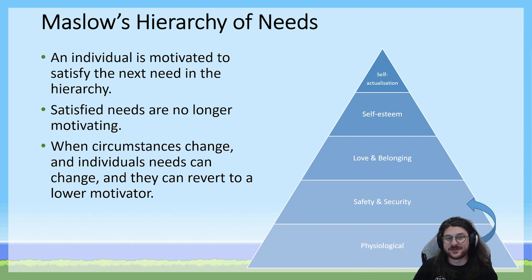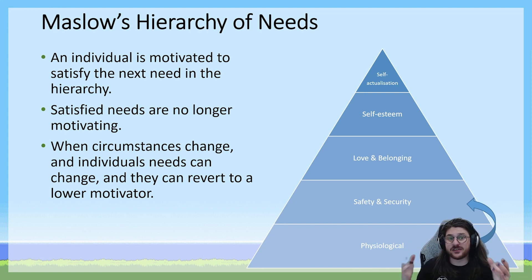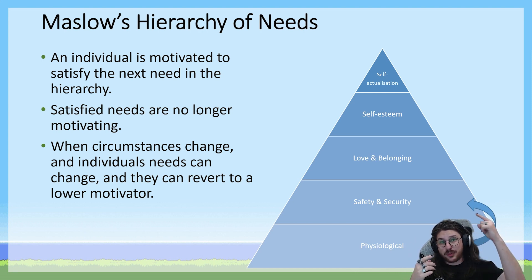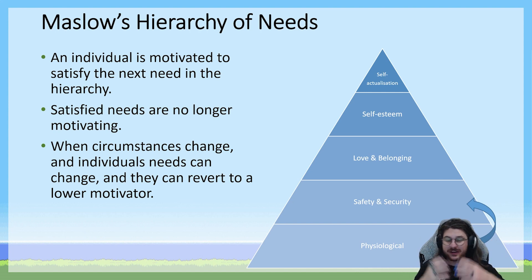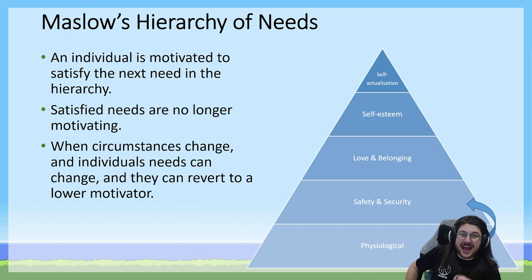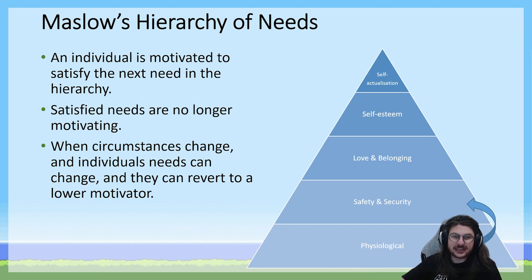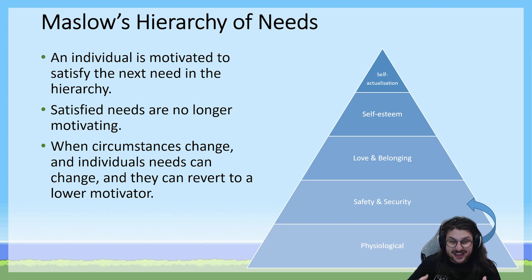Maslow described his theory like this: starting at the bottom, humans are driven to achieve whatever that motivator describes, and then they'll move up once it's achieved and be driven to achieve the next motivator in the hierarchy. Maslow was very clear that once a motivator is fulfilled, it is no longer motivating. Someone who has sufficient food, water, and air will no longer be motivated by physiological survival — they'll instead be motivated to work on short and long-term safety and security.